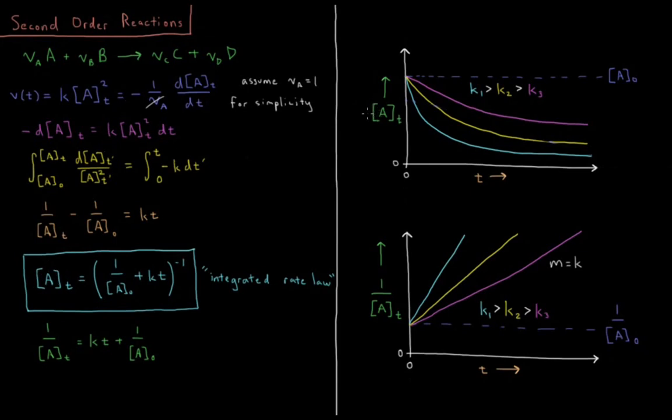So if I look at A of T, if I plot these starting at some initial concentration, A naught, the A gets consumed, its concentration goes down over time.